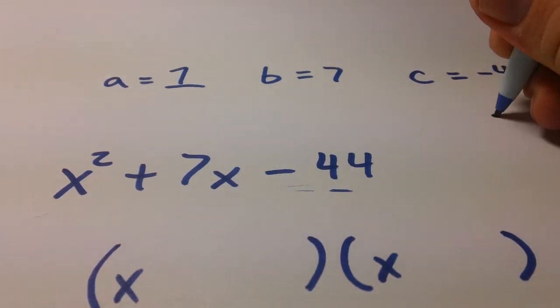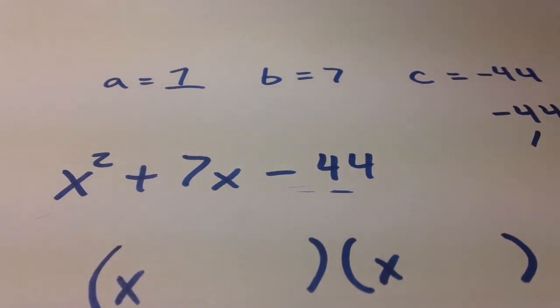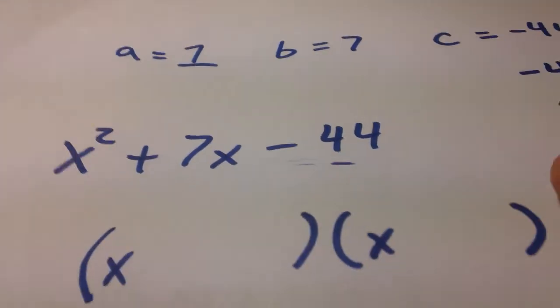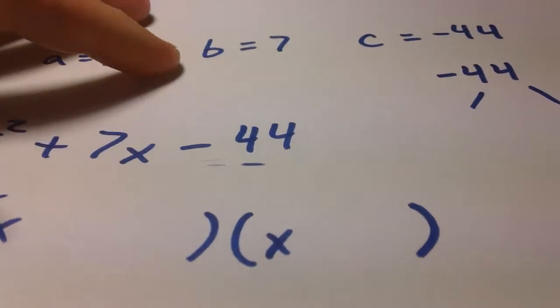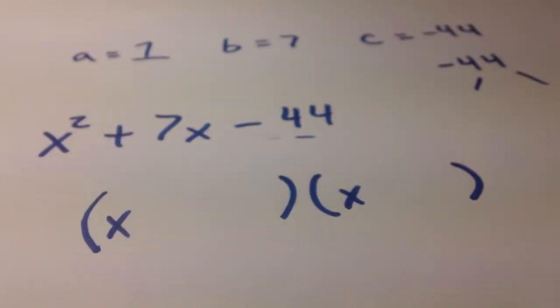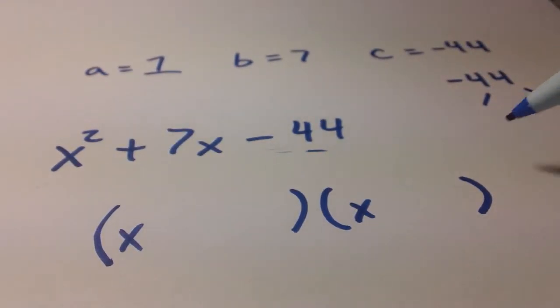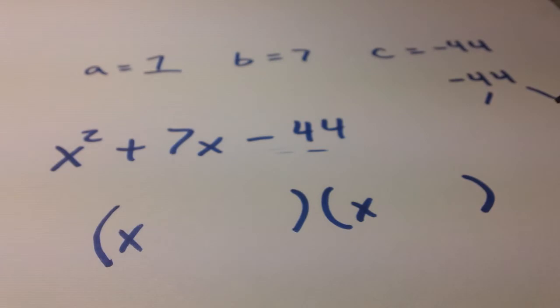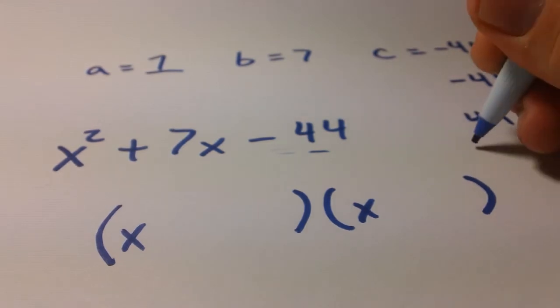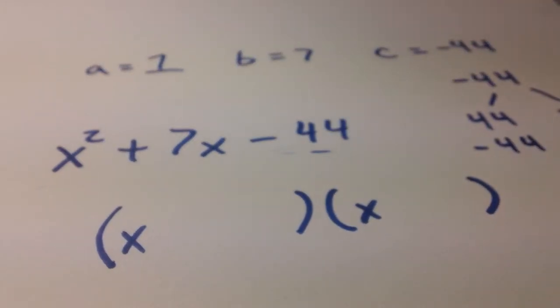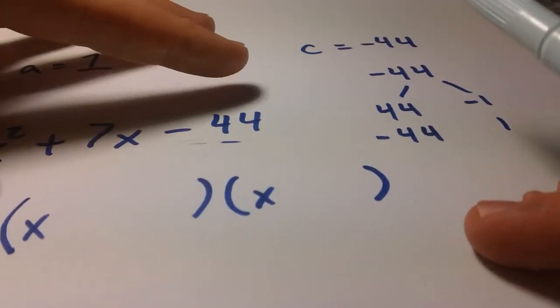So, we need to find factors of c, or negative 44, that add up to 7. So, let's figure it out. One thing to keep in mind is that because 44 is negative, then we're going to have to have a positive and a negative factor here. Because, otherwise, those are not going to multiply to a negative number. So, we always have 44 and negative 1, or negative 44 and positive 1. But, I'm betting you those aren't going to add up to 7, and I'm sure you guys know that as well.